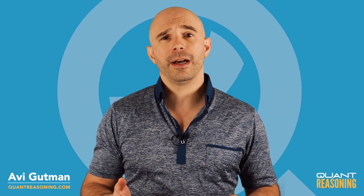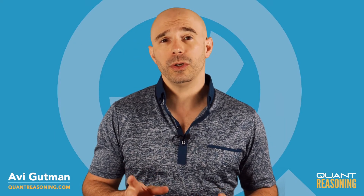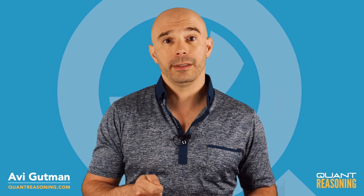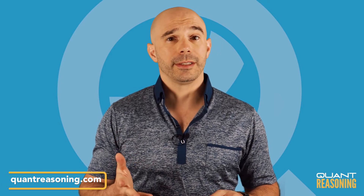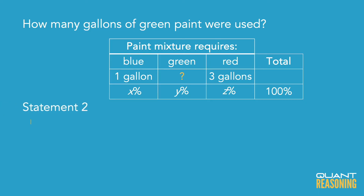Statement 2 gives us the value of z, so we know that 60% of the total was red. But remember, we also know from the free info that the blue was exactly one-third as much as the red, because it was one gallon versus three gallons. So if the red was 60%, the blue must be 20%, because 20 is a third of 60, and that leaves us with only 20 more percent for the green, which means that blue and green were equal amounts — just like statement 1 said. Which means these statements are inferentially equivalent.